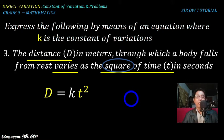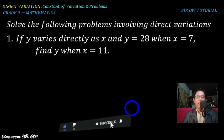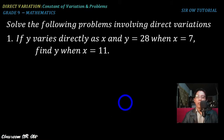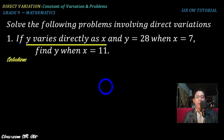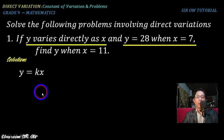Now let us solve problems involving direct variations. Example one: if y varies directly as x, and y equals 28 when x is 7, find y when x is 11. From the statement, y varies directly as x, so y = kx. Substituting y = 28 and x = 7, we get 28 = 7k, and we are solving for the constant of variation k.